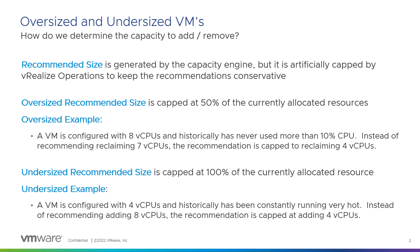Oversized VM recommendations are capped at 50% of the currently allocated resources. For example, if a VM is configured with 8 vCPUs, but we observe that it has never used more than 10% of these allocated vCPUs, it would have been natural to reclaim 7 vCPUs. But because of the 50% cap, the recommendation is to reclaim only 4 vCPUs.